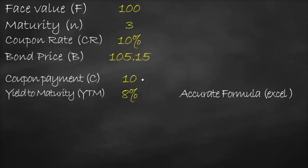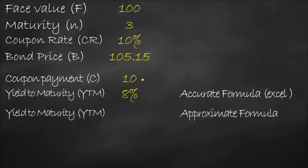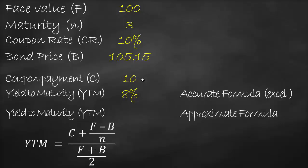Do we have another way to calculate yield to maturity? Yes — the approximate formula. It is not accurate but gives a close percentage to the actual yield to maturity. The approximate formula equals coupon payment plus (face value minus bond price) divided by maturity, all divided by the average of face value and bond price, which is (face value plus bond price) divided by two.